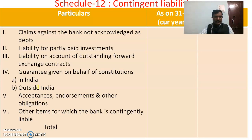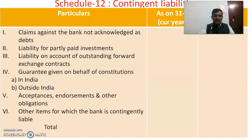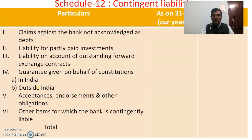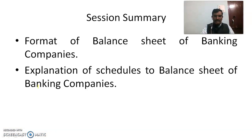Schedule 12 covers Contingent Liabilities, which include claims against the bank not acknowledged as debts, liability for partly paid investments, liability on account of outstanding forward exchange contracts, guarantees given on behalf of constituents in India or outside India, acceptances, endorsements and other obligations, and other items for which the bank is contingently liable. The total is taken to the balance sheet under Schedule 12 as Contingent Liabilities.